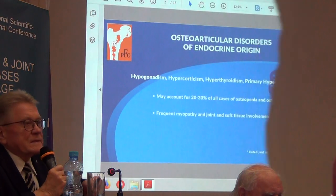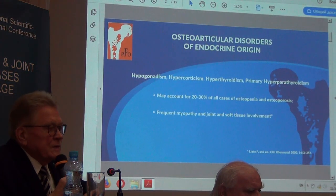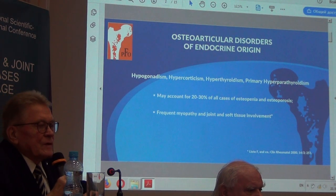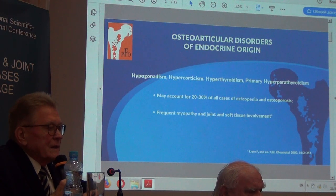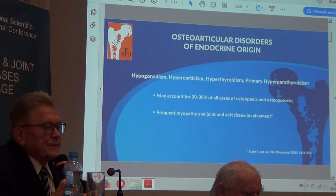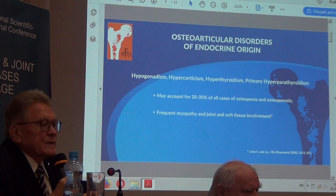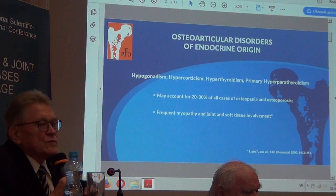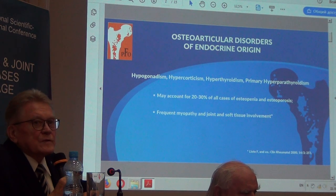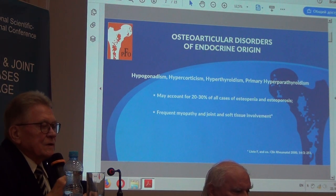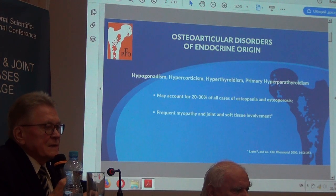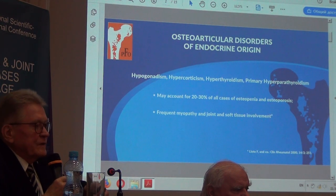From yesterday's and today's splendid lectures, we know a lot about osteoarticular disorders of endocrine origin. Hypogonadism, hypercortisism, hyperthyroidism, and mainly primary hyperparathyroidism is responsible for 20 to 30% of all cases of osteopenia and osteoporosis. Also, I frequently see myopathy and joint and soft tissue involvement.